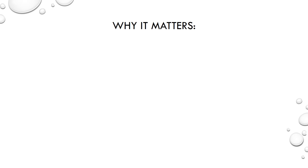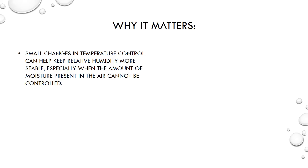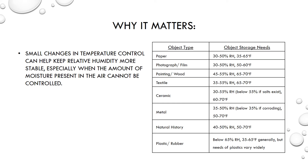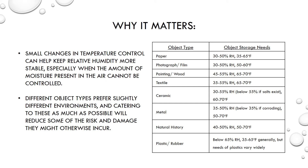Knowing how temperature can affect relative humidity matters. When the amount of moisture cannot be controlled, small temperature changes can keep relative humidity somewhat more stable. Those changes could be the difference that keep humidity from going above 50 or 60 percent in the summer, or from going below 30 or even 20 percent in the winter. This chart demonstrates that different object types have different preferences for their environment, and catering to these as much as possible can help reduce risk and damage. Being within these ranges for as long as possible would help keep these objects around for as long as possible.